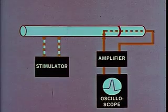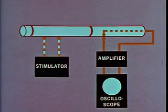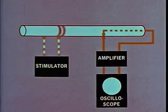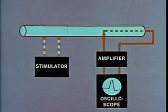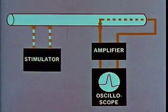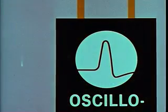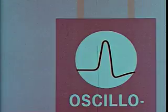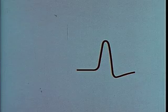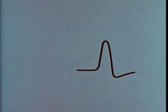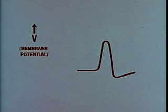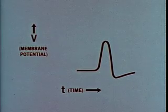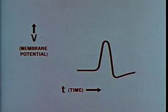The impulse can be recorded as a wave of electric potential, which is amplified and displayed on an oscilloscope. This curve of electric potential difference across the membrane, plotted against time, is called an action potential.